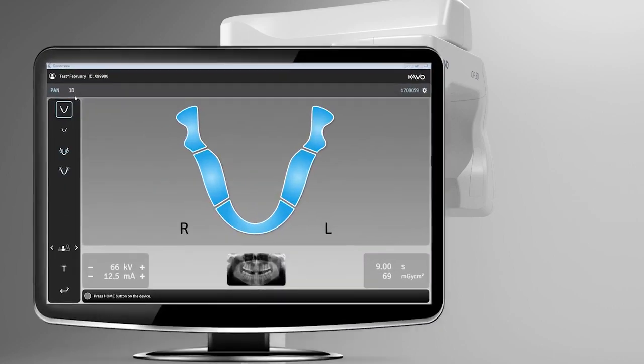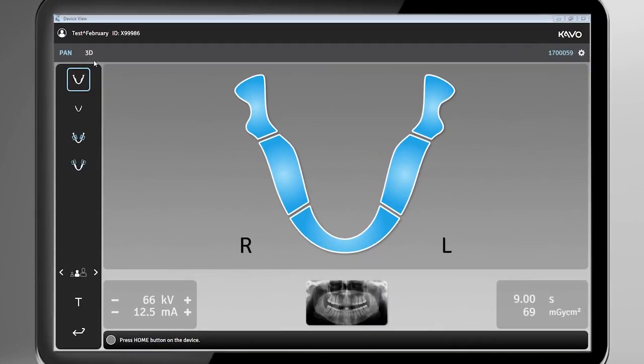Within the OP3D graphical user interface, you will find two image modality selections, Pan or 3D, the image program settings, the main view area that displays a dental chart for the selected modality, the status message bar, image parameters, exposure time and DAP, a sample image of the selected program or 3D field of view size and location, a patient size selector, test indicator, and an end study button.